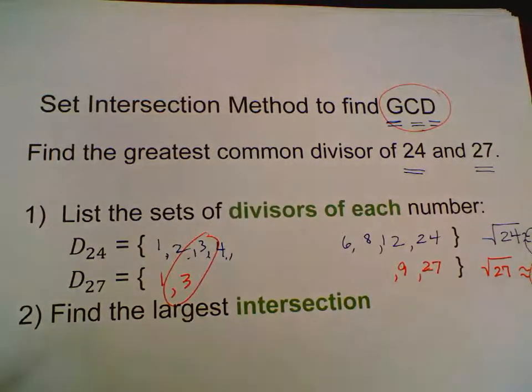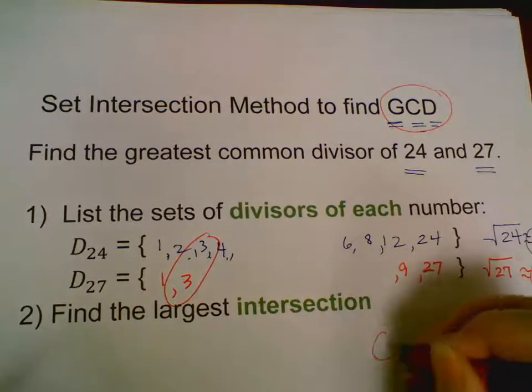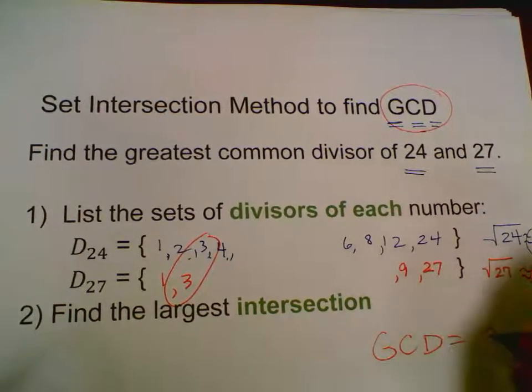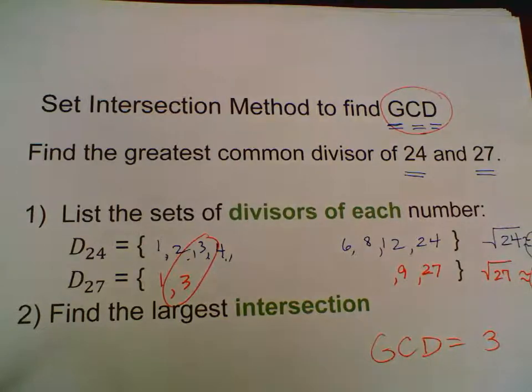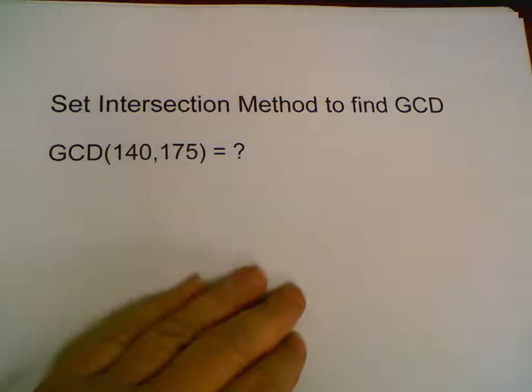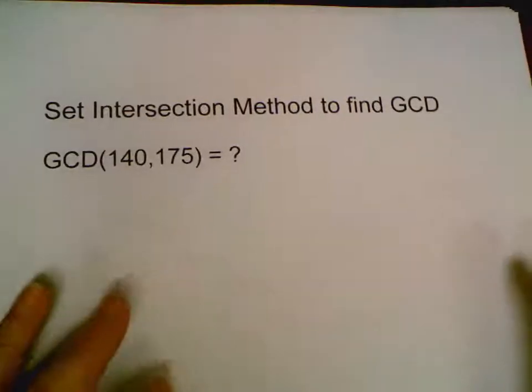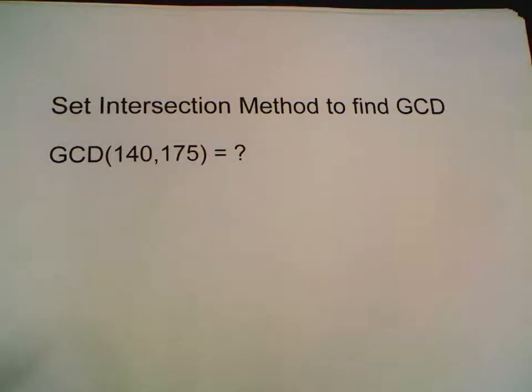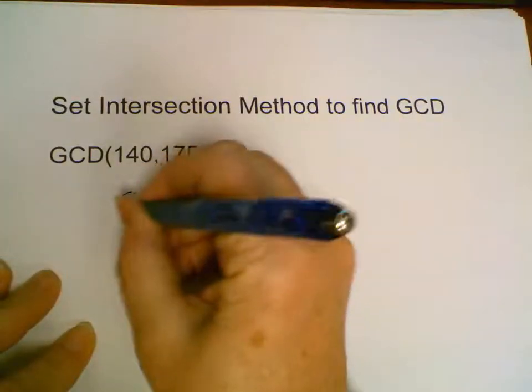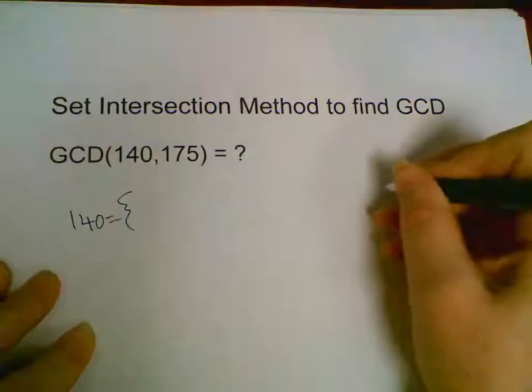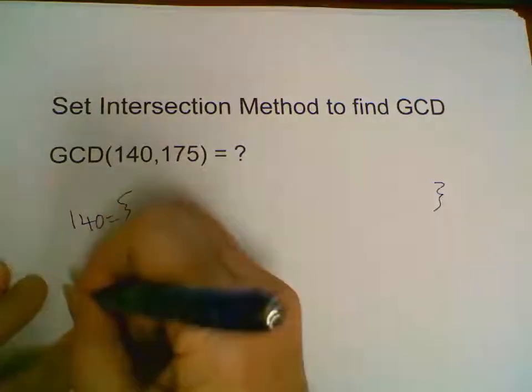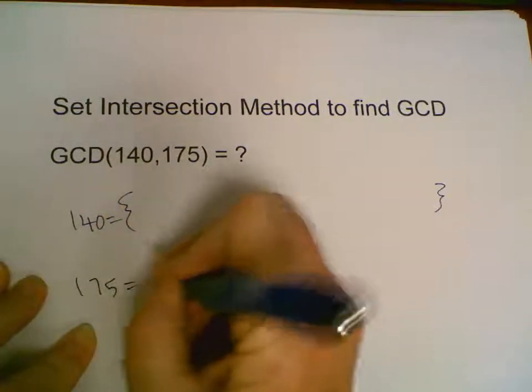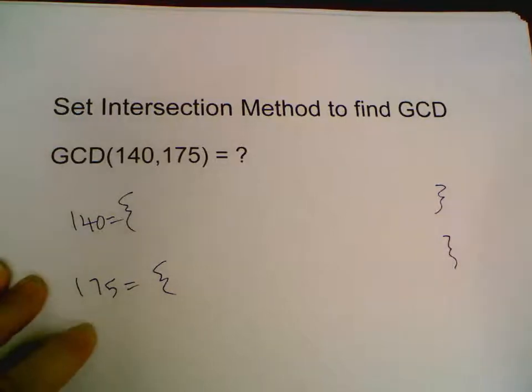Let's do another example. Let's find the greatest common factor between 140 and 175. So we'll list in a set all the factors of 140 and we'll list all the factors of 175. This takes a while and you might like another method better, but here we go.